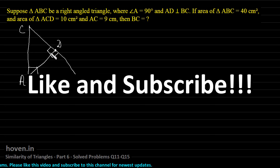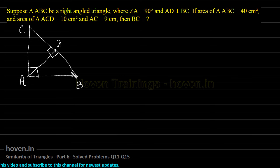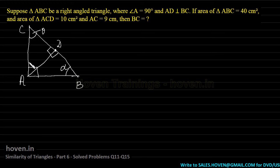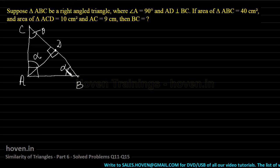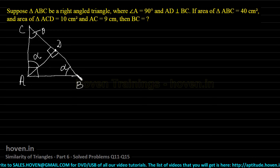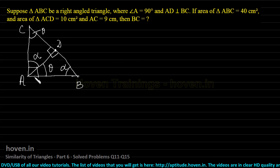One similar triangle is ACD, the second is ABD, and the third is the bigger triangle ABC. It is often better to start by marking one angle as alpha and another as theta. Once you mark these, come to the smaller triangle — you will observe that this angle should be alpha, because it is a right-angle triangle with theta and alpha. For the other smaller triangle, the corresponding angle has to be theta. So we have three similar triangles.